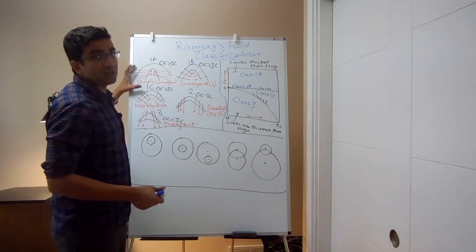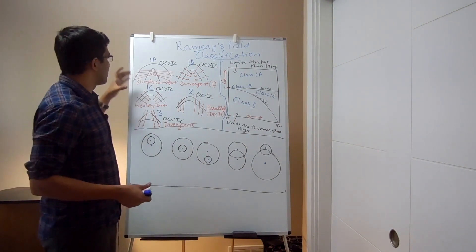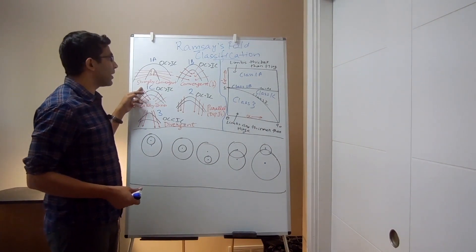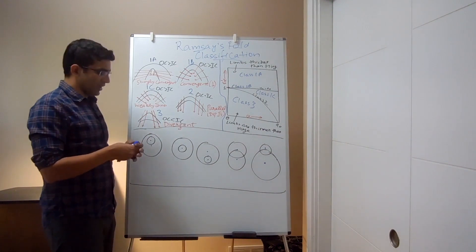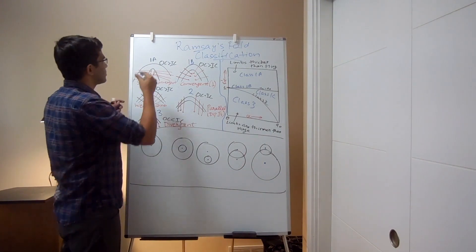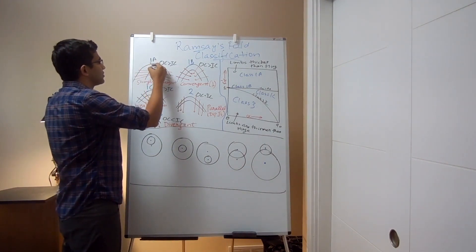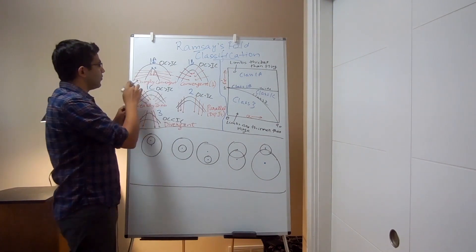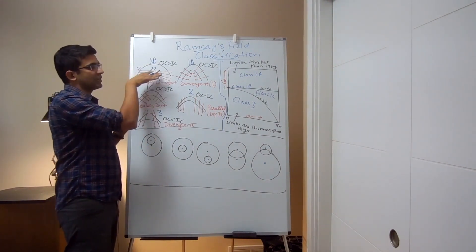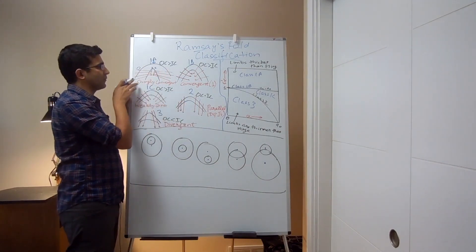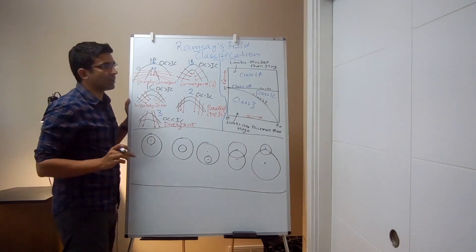This figure you would have already seen if you have studied basic structural geology. For class 1a, you have this strongly convergent pattern of dip isogons. When defining convergent or divergent, we go from the outer surface on top to the inner surface on the bottom. As you go from the outer to the inner surface, the dip isogons are converging, which is why arrows are marked in the outward-to-inward direction, showing this strongly convergent pattern.